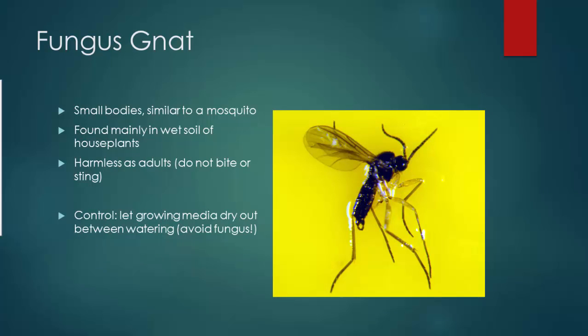A fungus gnat — one of the main reasons that you have fungus gnats is because you have fungus, and if you have fungus it's because you're watering too much. Usually it's found because of wet soil; they feed off of that fungus in the soil. One of the controls is to just avoid fungus by avoiding watering too much, which is a common problem in school greenhouses. Watering too much can be just as big of a problem as not watering enough.